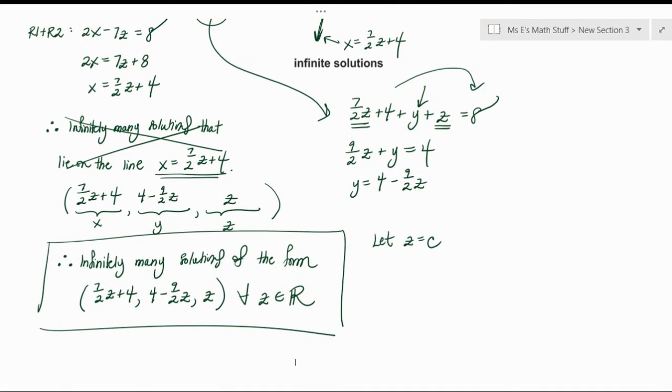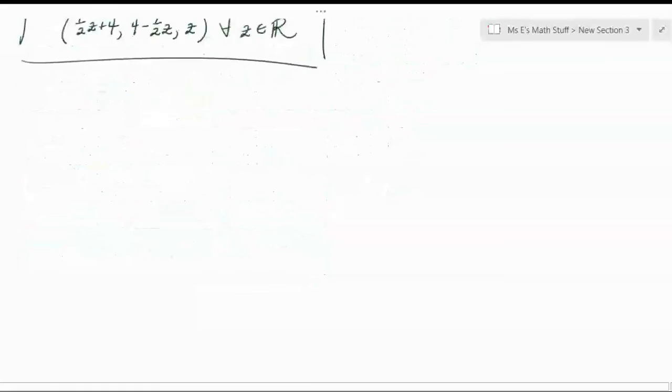You could have, for example, back up here if you had chosen to solve for z instead, then you would have had z in terms of x, and so you could have written your final answer in terms of x instead and it would have looked quite different. So there are different ways your answers could look for those. Hopefully that makes sense.